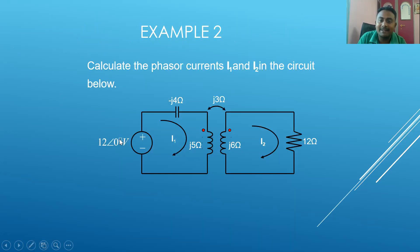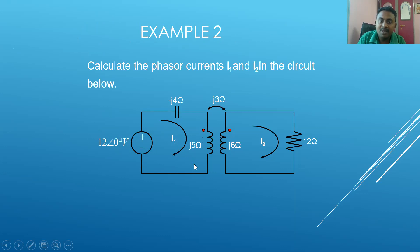The next problem involves magnetically coupled coils — two coils with no physical contact. In this problem, we have one source of 12∠0° volts supplying coil one, and a mutual inductance of j3 Ω between coil one and coil two. I am using KVL to find the phasor currents i1 and i2, considering two loop currents.